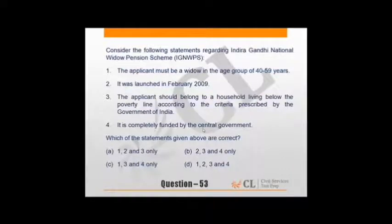Statements regarding Indira Gandhi National Widow Pension Scheme IGNWPS. Another scheme - I again tell you, for these schemes, just remember what's given. The applicant must be a widow in age group of 40 to 59 years. It was launched in February 2009. The applicant should belong to household living below poverty line. It is completely funded by central government - no, it's not completely funded by central government. Rather, state government also contributes equal amount. So fourth stands incorrect, 1, 2, 3 stand correct. For schemes, just remember what's asked and by-heart these correct lines. There are many schemes, impossible to remember most. This may be preparation for these schemes.